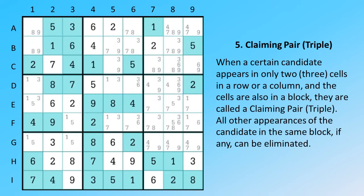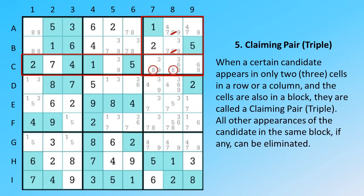When a certain candidate appears in only two or three cells in a row, or a column, and the cells are also in a block, they are called a claiming pair, or triple. All other appearances of the candidate in the same block, if any, can be eliminated.